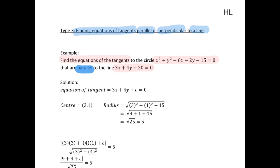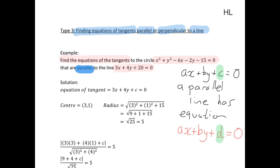You might recall that if we have an equation for line ax plus by plus c equals 0, a parallel line has equation ax plus by plus d equals 0. So the only thing that changes to get a parallel line is the constant value because you want the two equations to have the same slope.